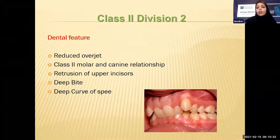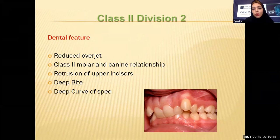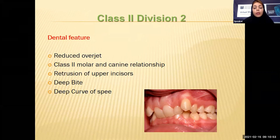In class 2 division 2, dentally, we have reduced overjet and upper incisors are retruded, but there is a class 2 molar and canine relationship. The most prominent feature of these patients is deep bite — a very severe deep bite. There is sometimes an overlap between lateral incisors and central incisors, and they also have a very deep curve of Spee.